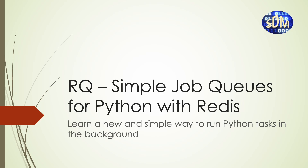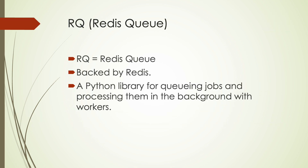In this video, we will introduce RQ, short for RedisQ, a simple job queue system for Python with Redis, and learn a new and simple way to run Python tasks in the background. RQ stands for RedisQ and is a simple Python library for queuing jobs and processing them in the background with workers. It is built on top of Redis and designed for ease of use and simplicity.